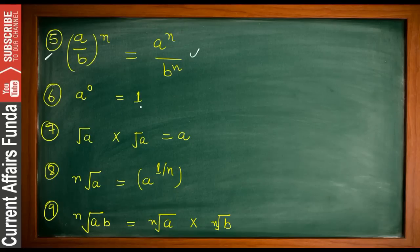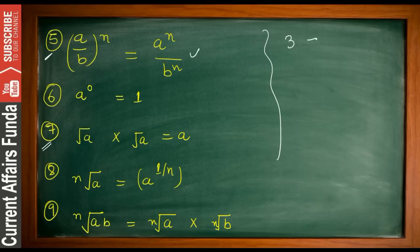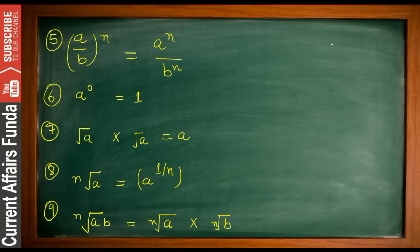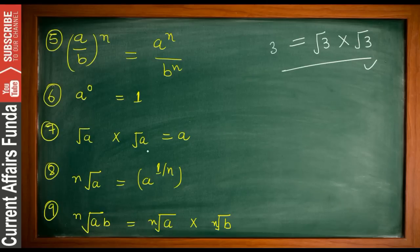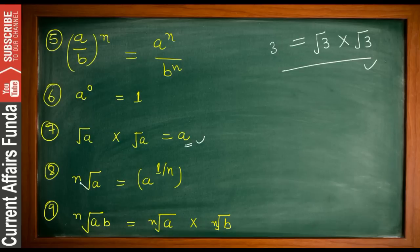Formula seven: √a × √a = a. For example, √3 × √3 = 3. Also note that √a can be written as a^(1/2), and more generally, the nth root of a is written as a^(1/n). So if you have a^(1/n), that represents the nth root of a.